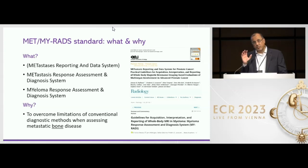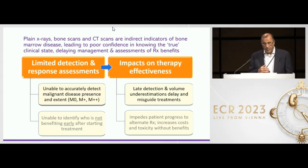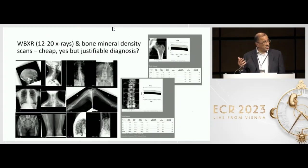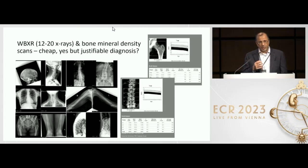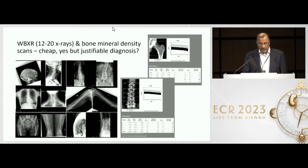The reason that we introduced these techniques into the clinic was to overcome some of the limitations that we know occur when we use conventional imaging. For example, when we do multiple myeloma, we use x-rays to make a diagnosis. But what you have to remember is that when we do multiple myeloma, we are looking at end organ damage. So to make a diagnosis when something has already occurred is in fact not justifiable.